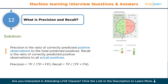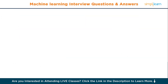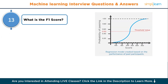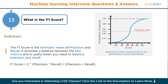Moving to question number thirteen: what is the F1 score? The F1 score is the harmonic mean of precision and recall. It provides a balance between the two metrics and is useful when you need to balance precision and recall. F1 score = 2 × (Precision × Recall) / (Precision + Recall).